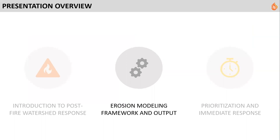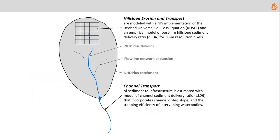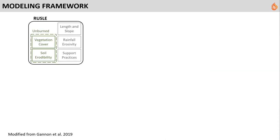Now I'll get into the geospatial modeling component. This is a distributed model where all inputs are raster products, summarized at various scales — outputs can be displayed as spatially distributed rasters or summarized at the watershed scale, which we often do given the stakeholders we work with. We specifically modeled gross hillslope erosion using the RUSLE model — the Revised Universal Soil Loss Equation — which has been around for decades and is widely used in scientific research.